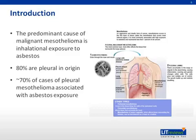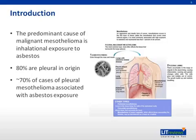Mesothelioma is an aggressive and deadly form of cancer. It occurs in a thin layer of tissue called the mesothelium that covers most of your internal organs. It is most commonly associated with high exposure to asbestos and represents less than 1% of all cancers.